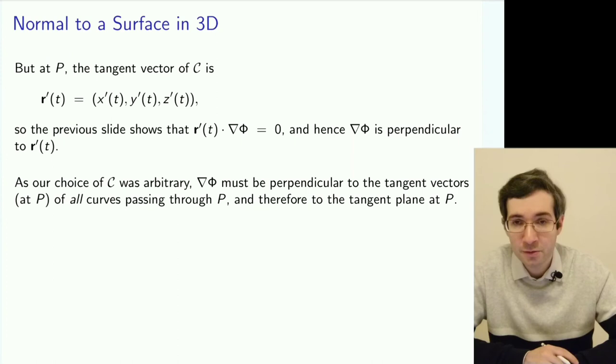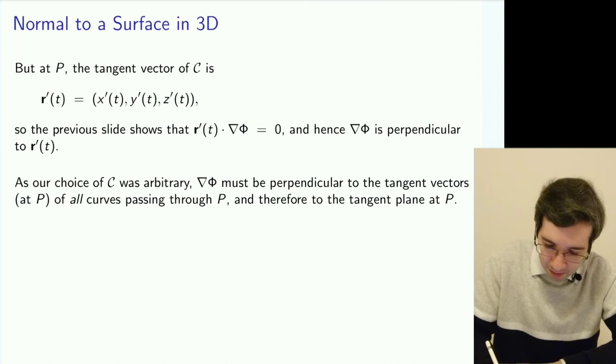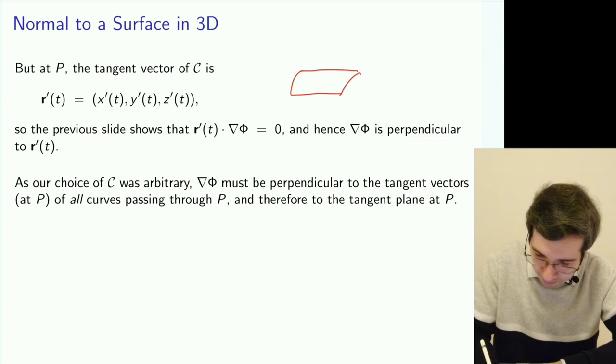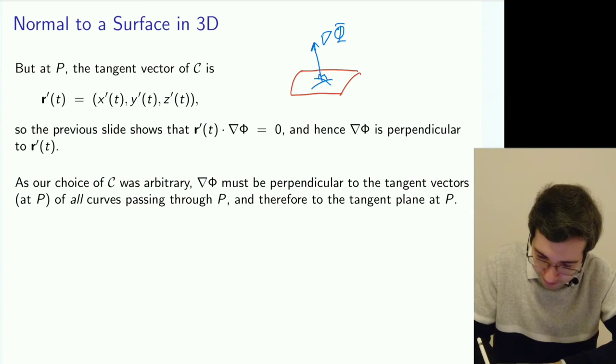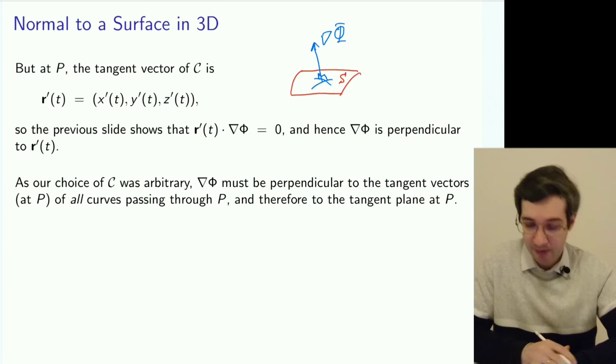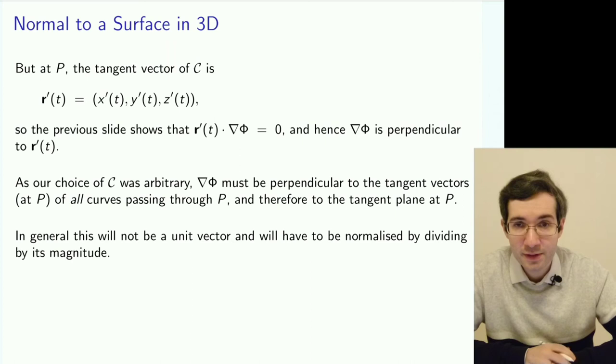So we found that for any surface we can get a gradient which will form the normal direction to any of the curves you will choose to pass through it.